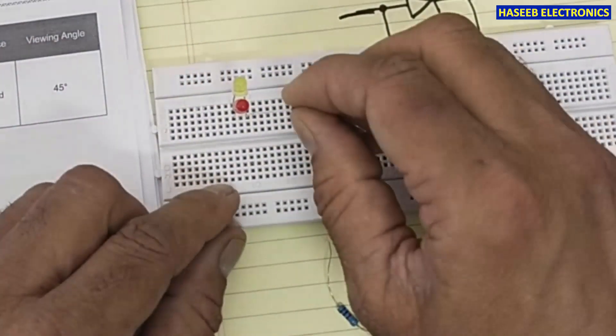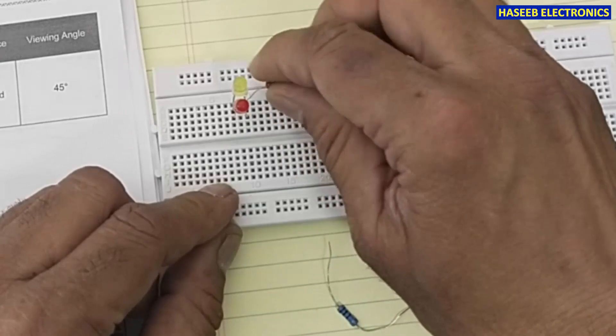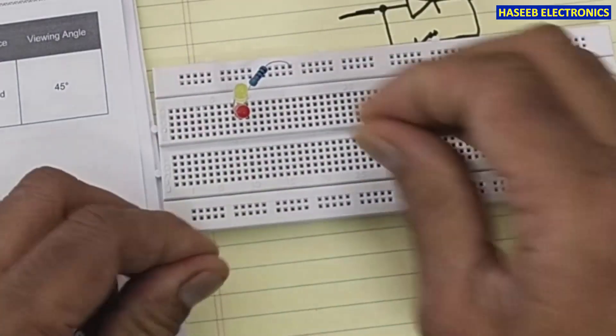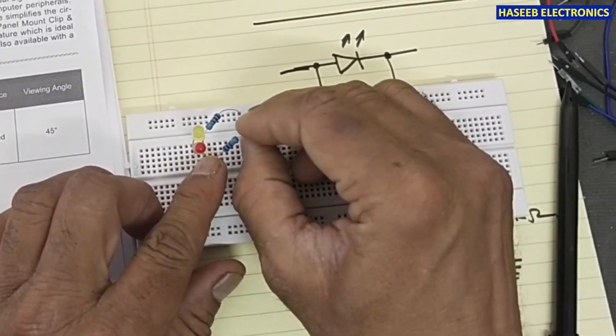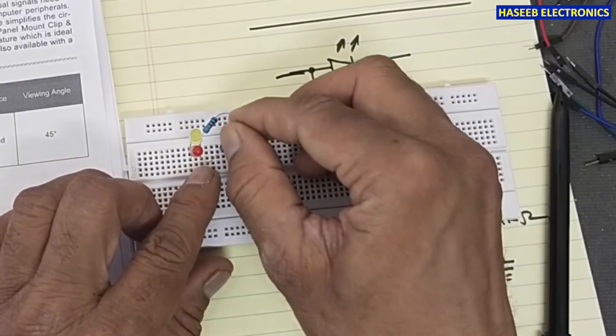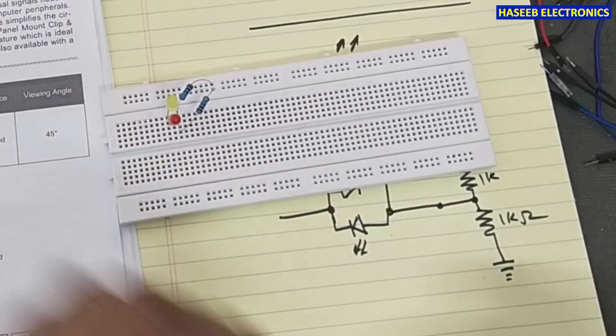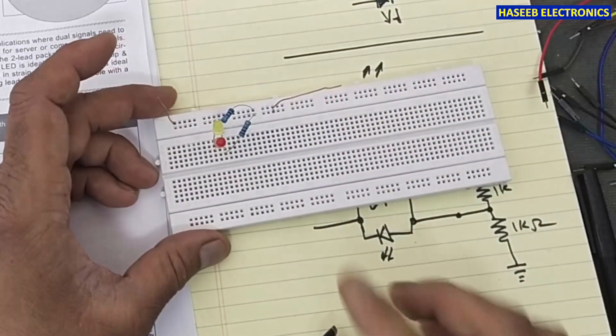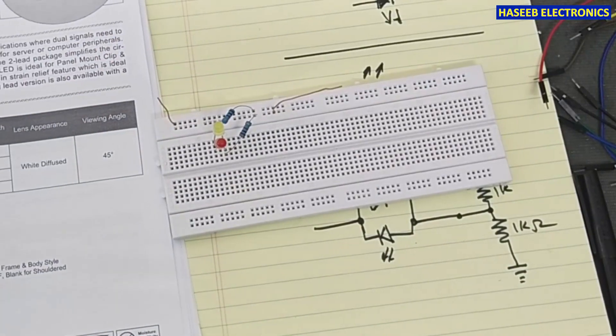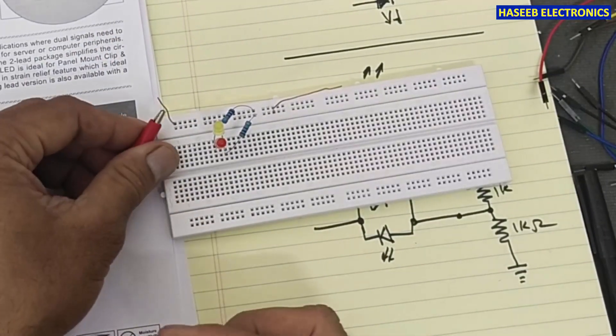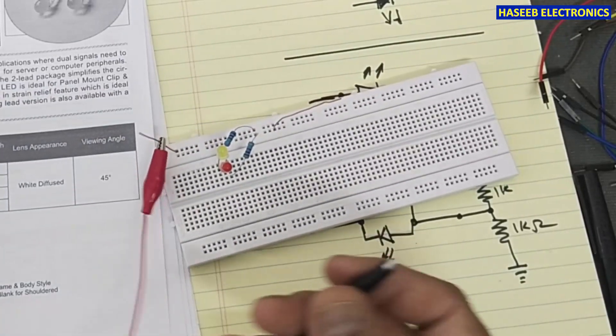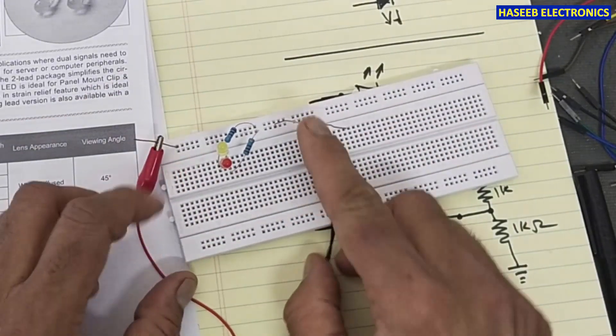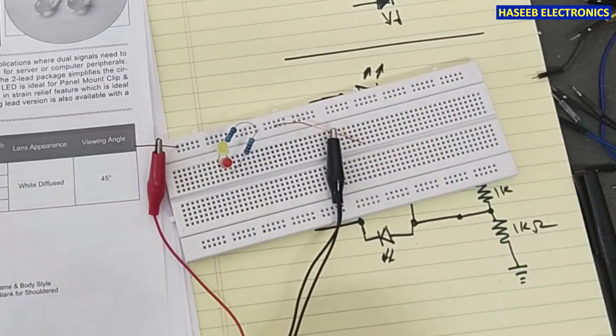And we will connect two resistors, one to the positive rail and second to the negative rail. Same configuration: positive voltage here, positive voltage here, return line here. Now we will connect.